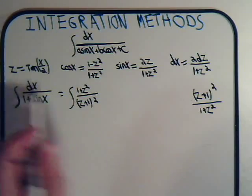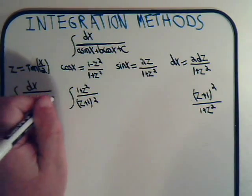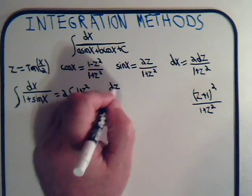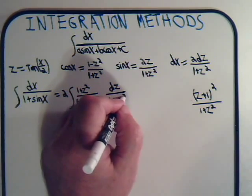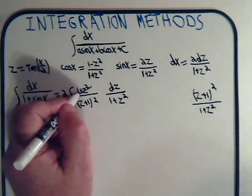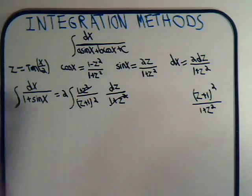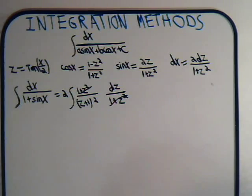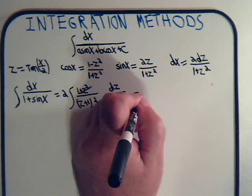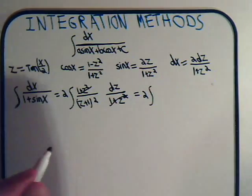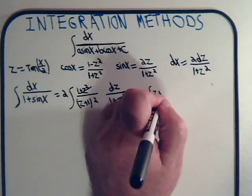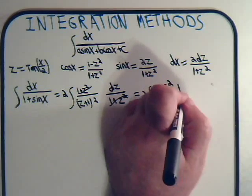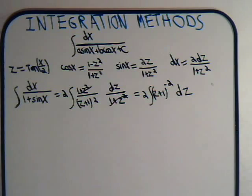When we write the integral, since this is in the denominator, we multiply by the reciprocal: 1 plus z squared divided by z plus 1 squared. And dx is 2 times dz divided by 1 plus z squared. Those conveniently cancel out, and it looks like it will equal the integral of z plus 1 to the minus 2 times dz. And this is a cinch.